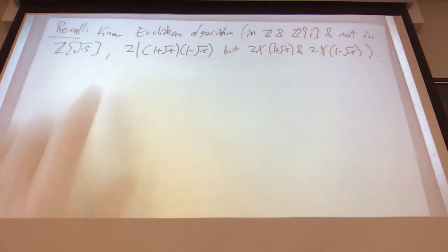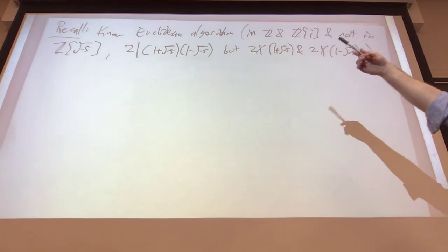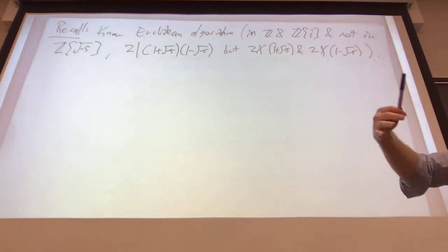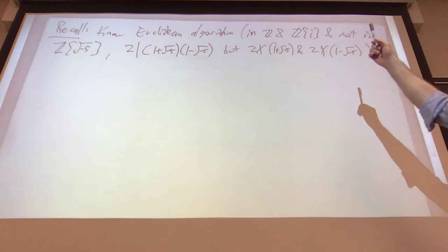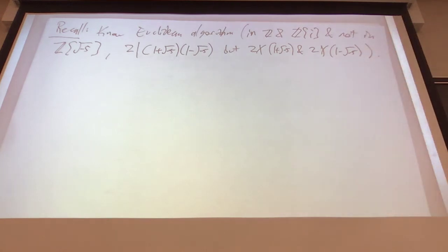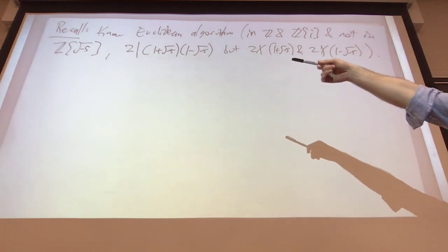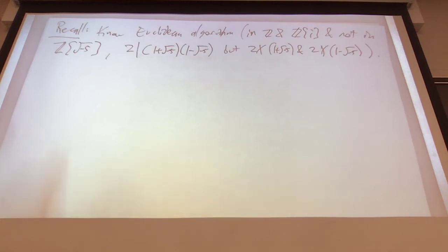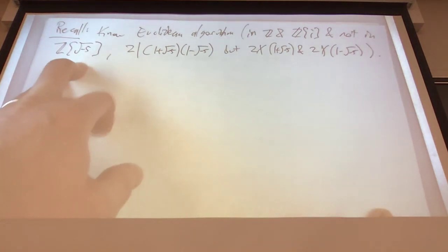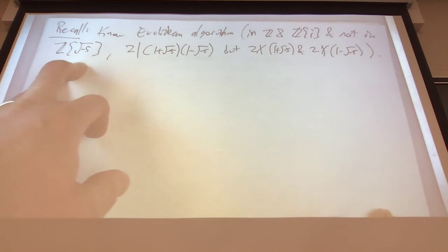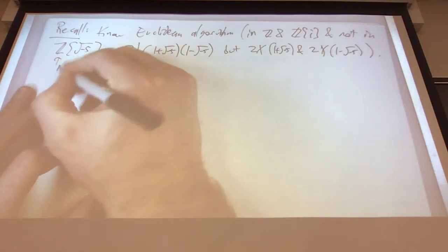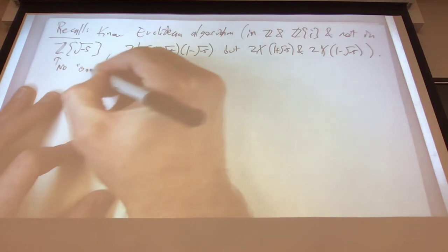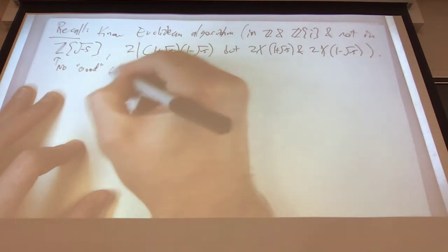So we know the Euclidean algorithm, which implies — at least in the case of integers — unique factorization. The same argument will give us that in the Gaussian integers, and it's very much not true in Z[√-5]. Why don't we have a division algorithm? There's no good division algorithm.